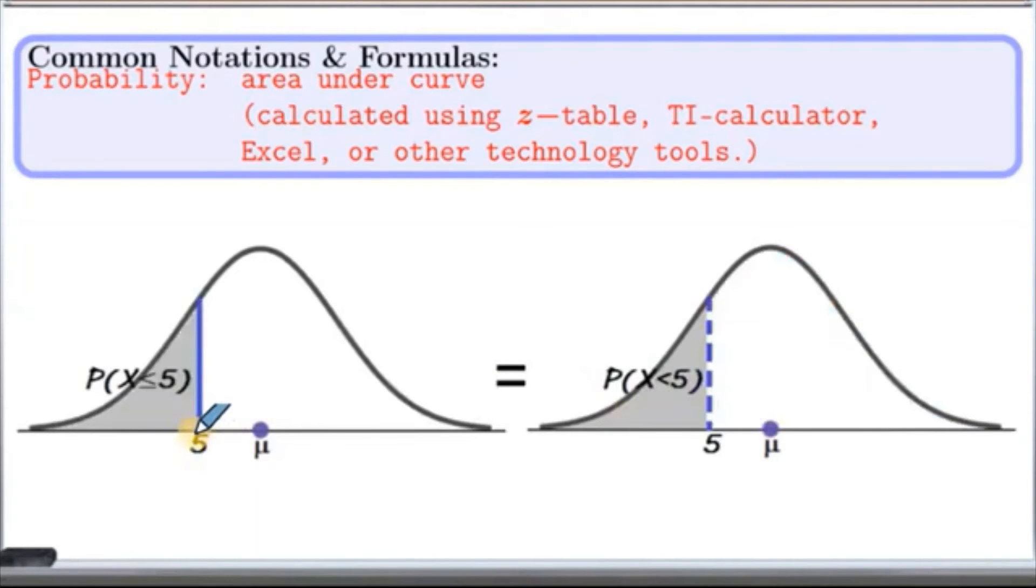If 5 is here, then the probability of x less than or equal to 5 is given by the shaded area here, given by this area, the shaded area.